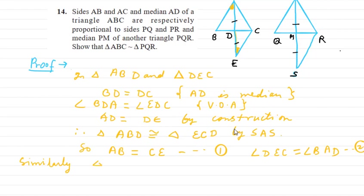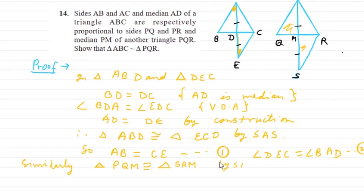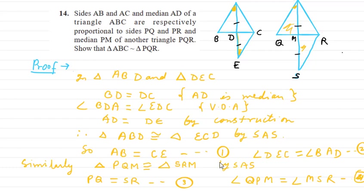Similarly, triangle PQM is congruent to triangle SRM by SAS. Therefore PQ equals SR — equation (3). And angle QPM equals angle MSR — equation (4).